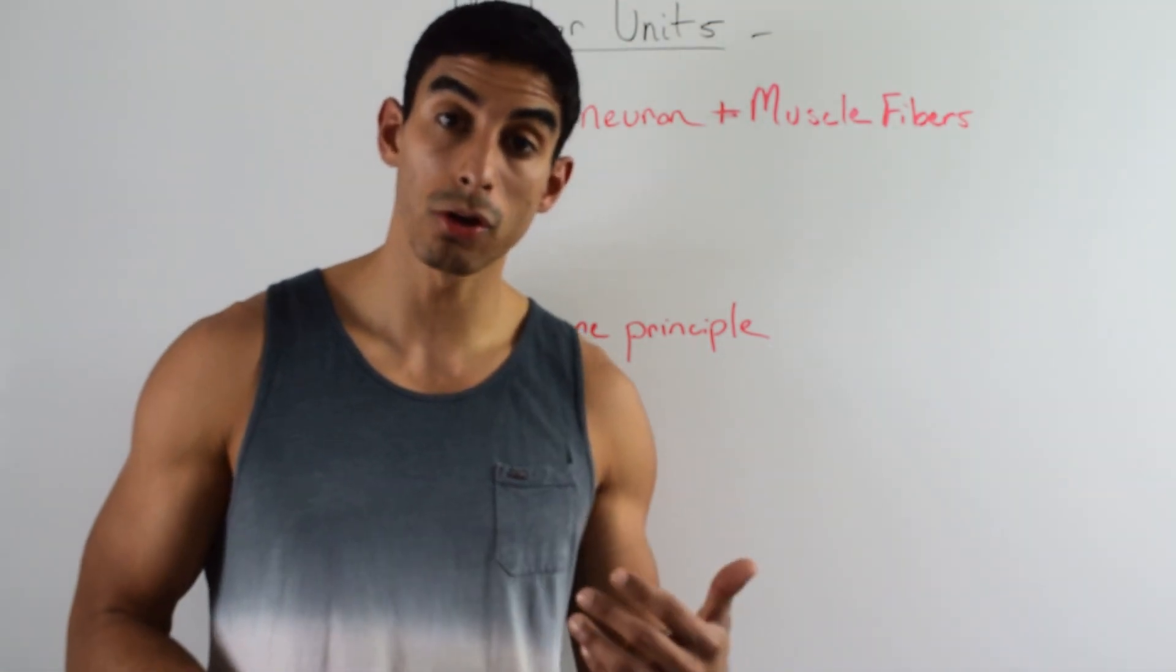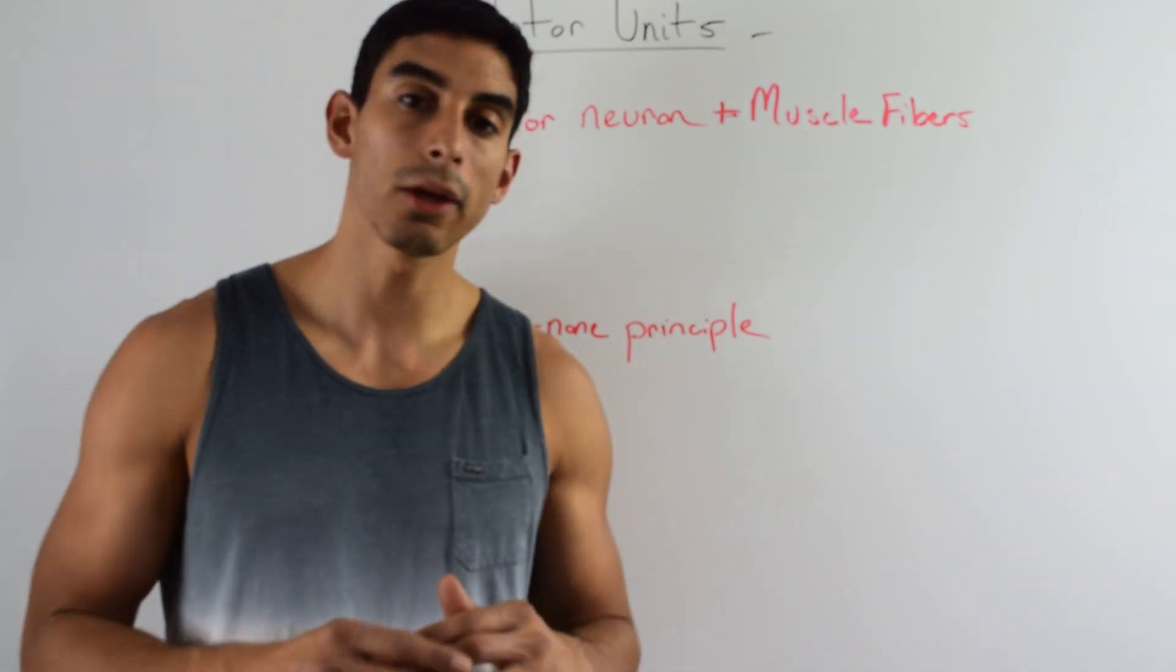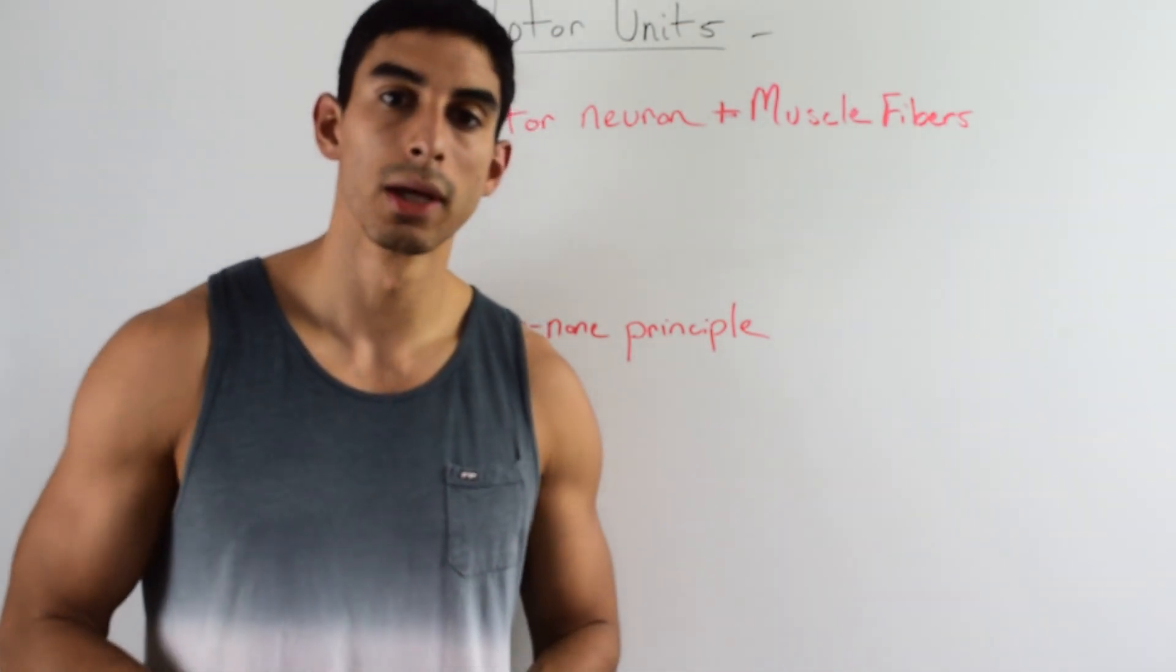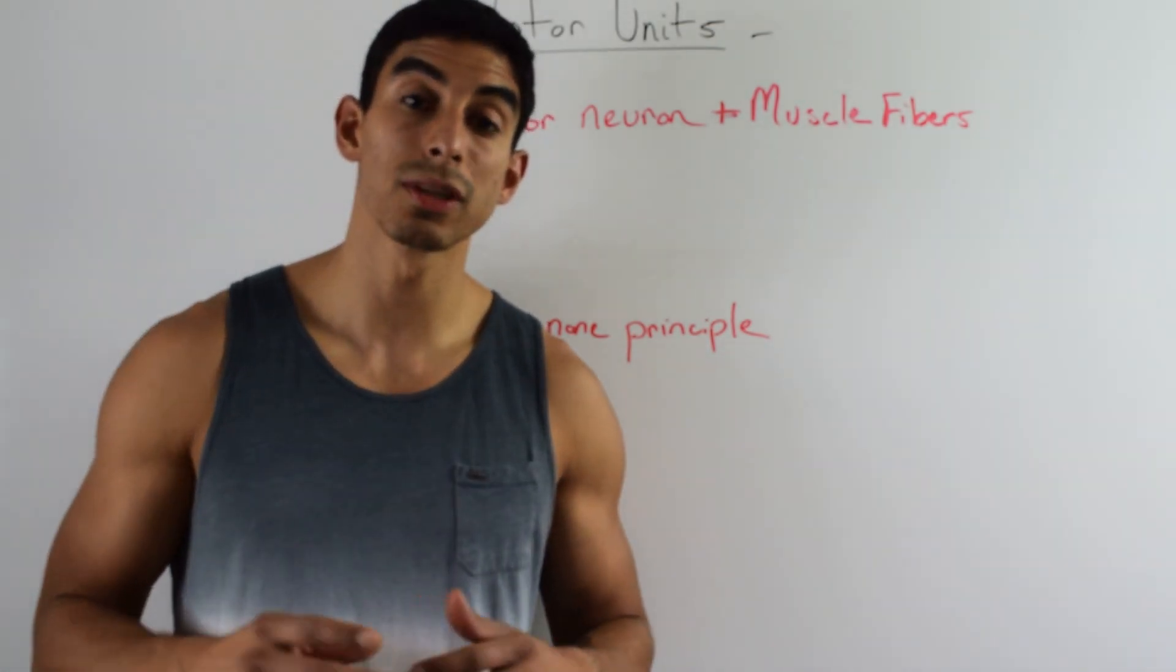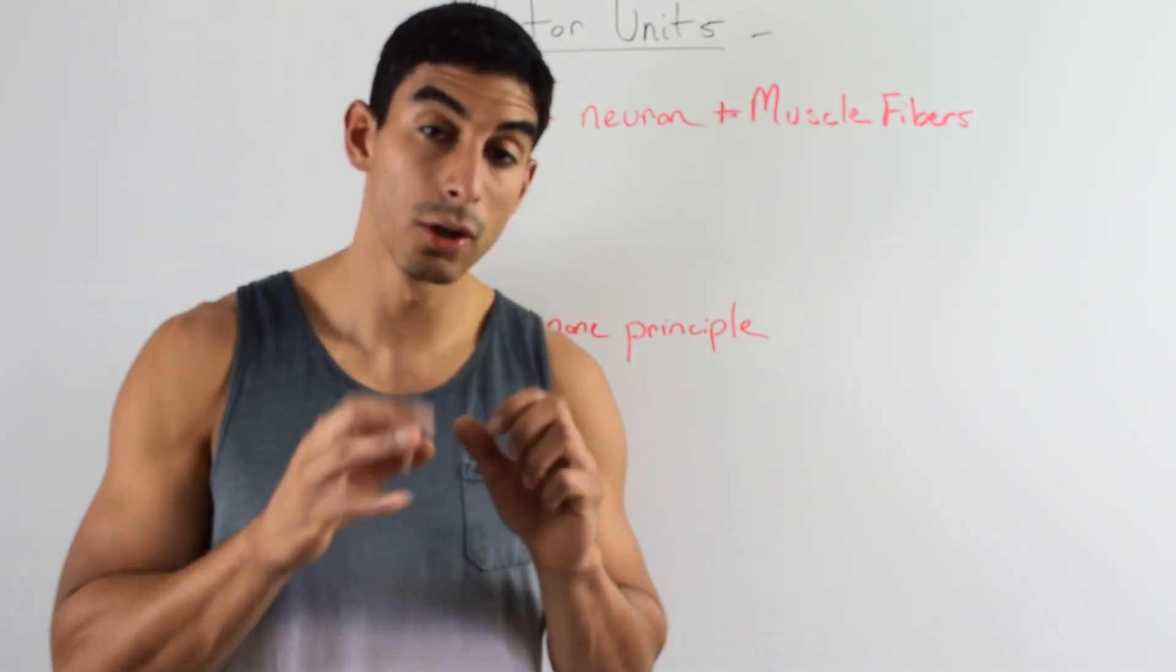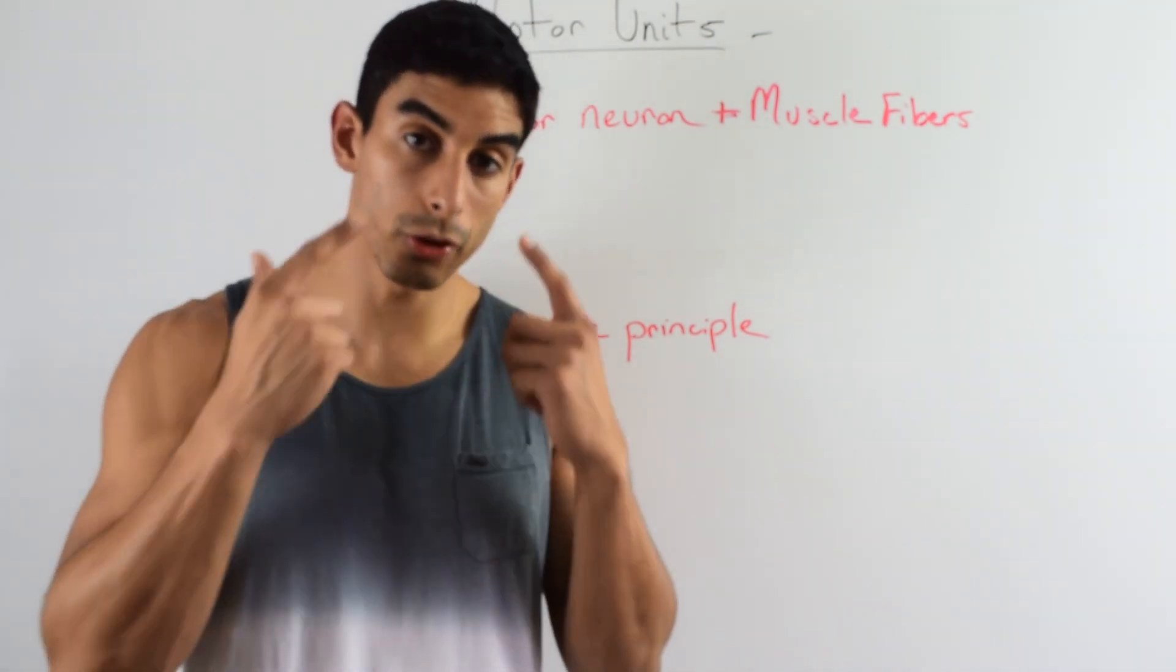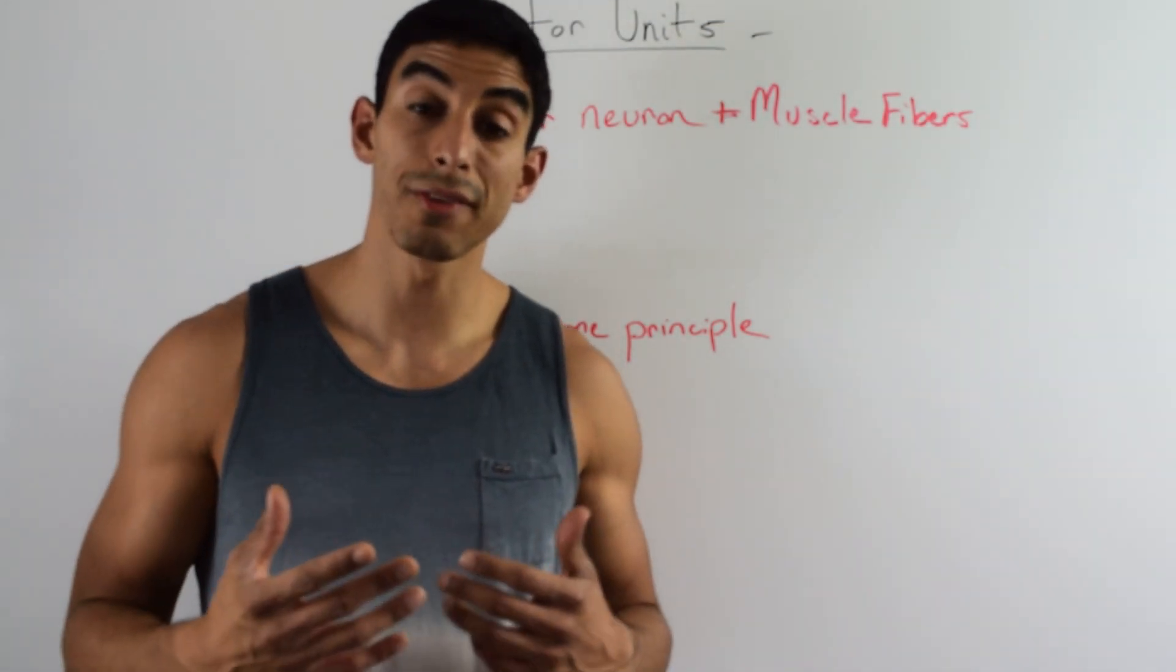On the other hand, smaller motor units consist of one motor neuron and only about 10 different muscle fibers. These types of motor units are capable of producing very intricate types of activities like the types of activities you can create with your hands, with your fingers. Your eyelids are very small motor units. Those are just a couple of examples.